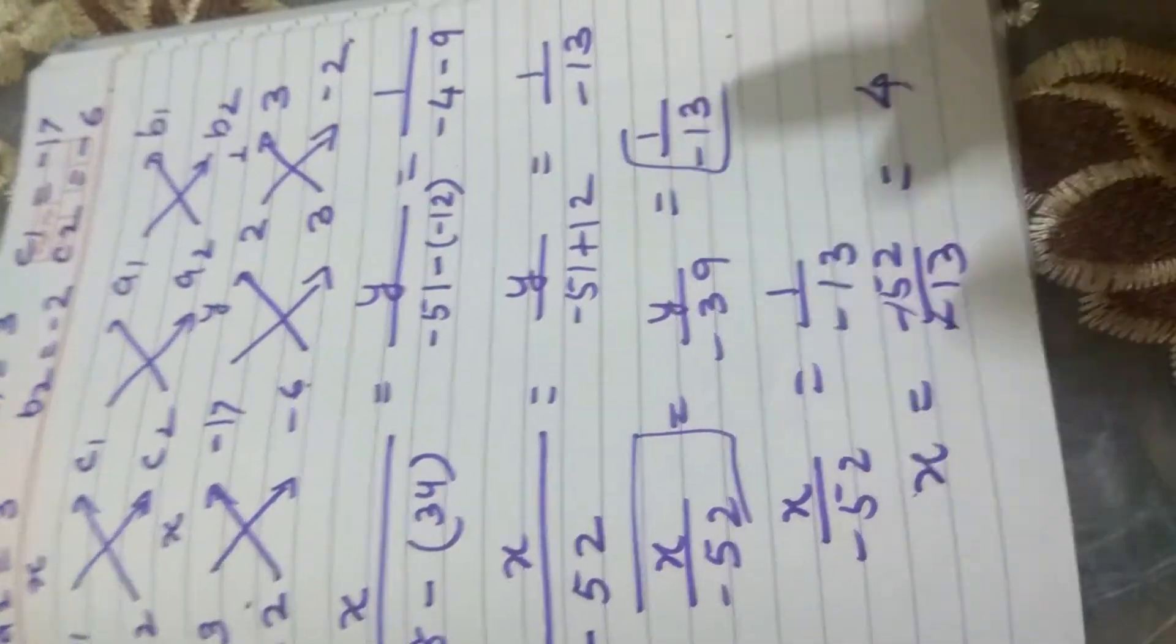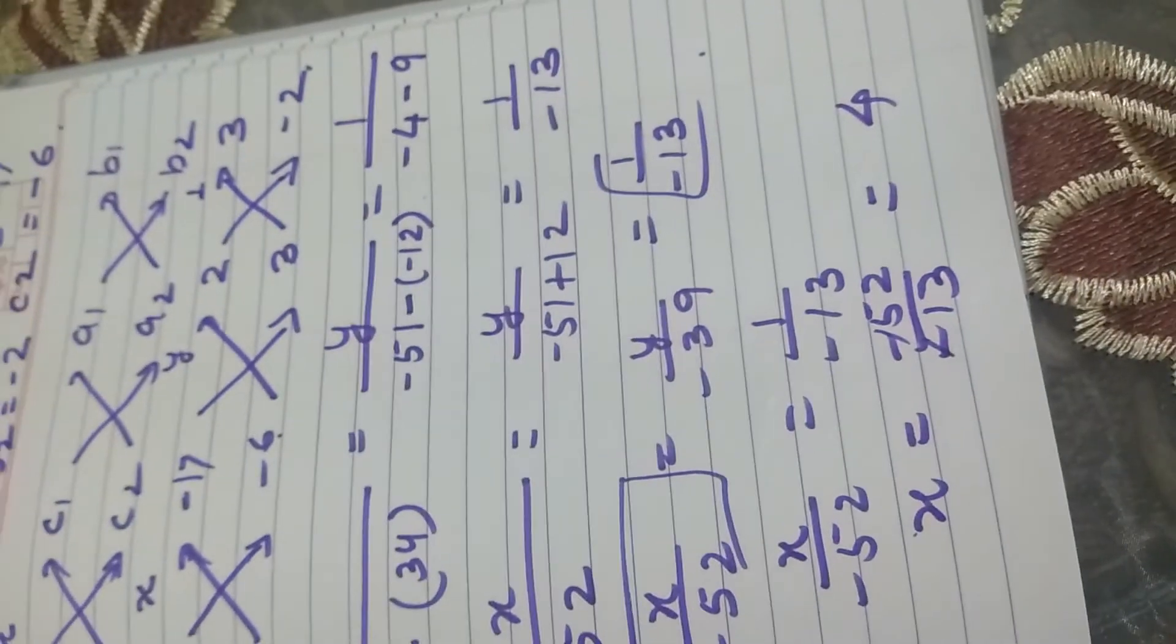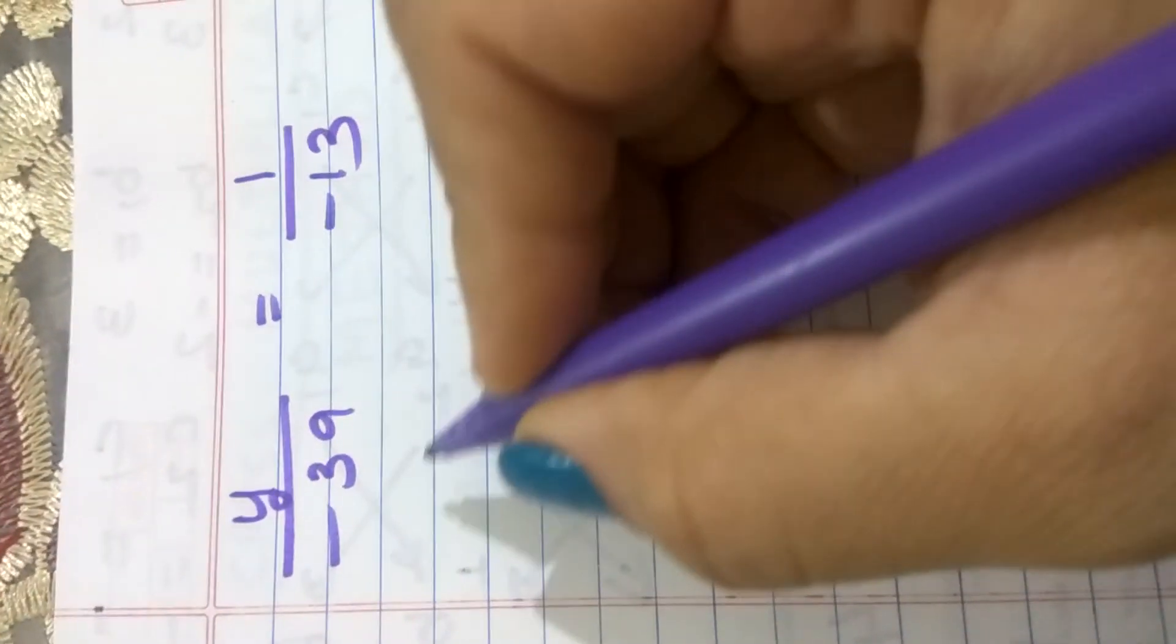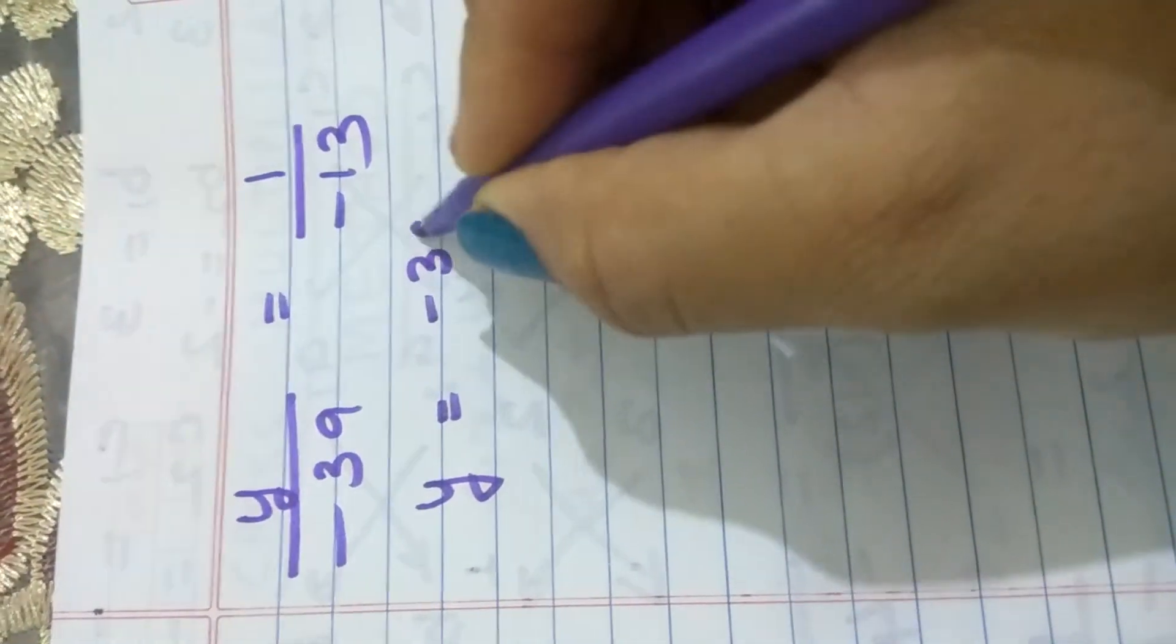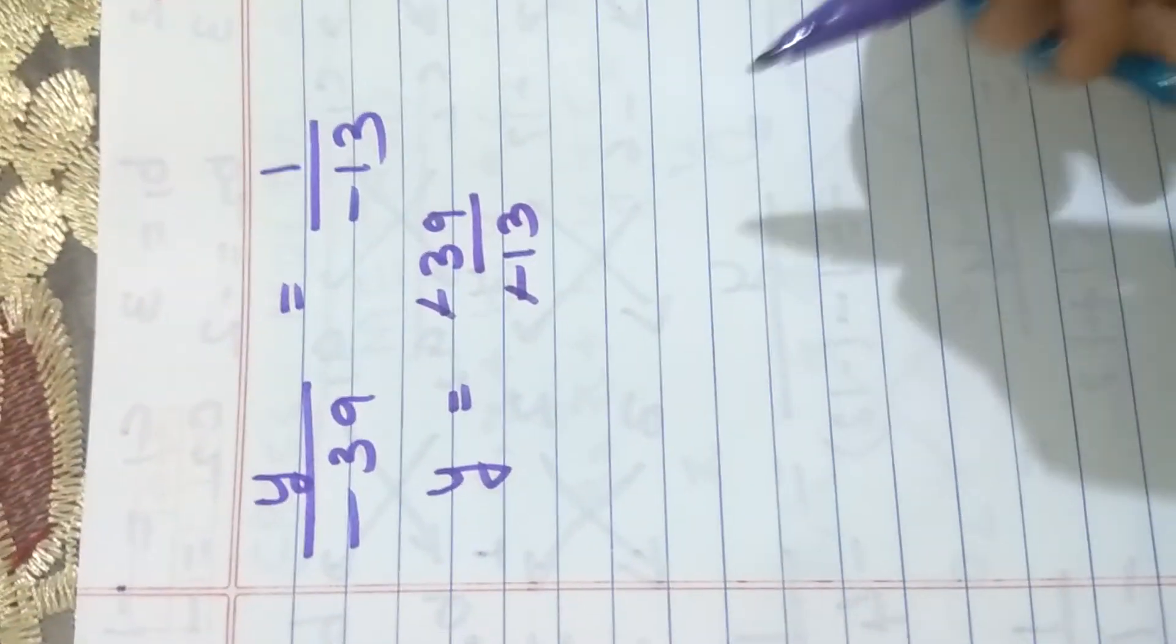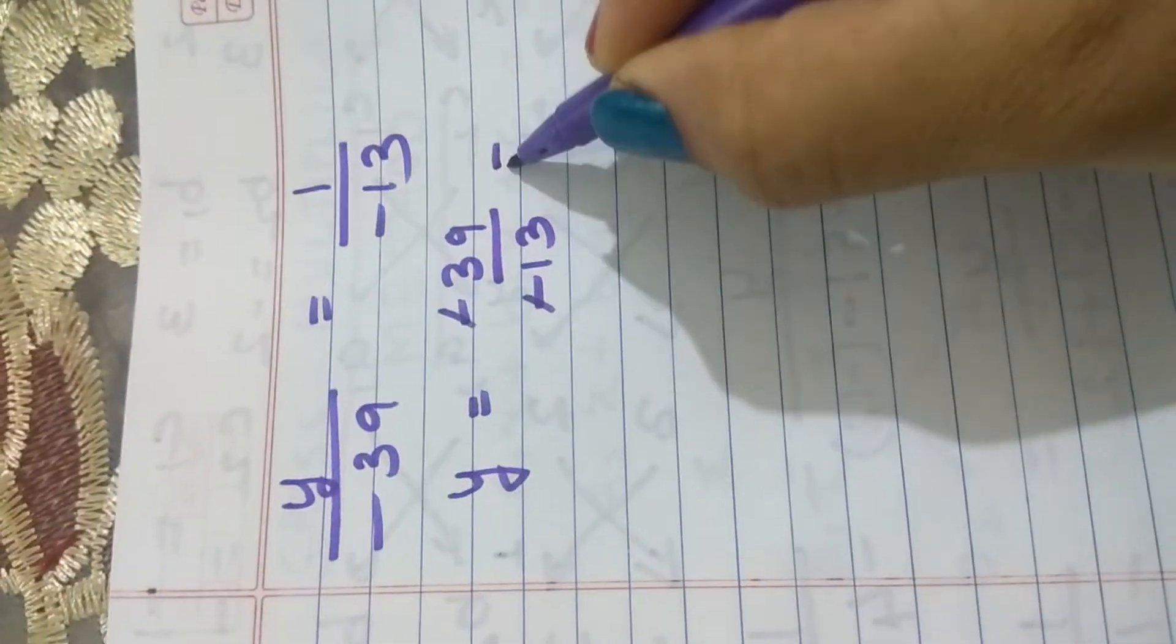Now, for finding out y, I will take this and this. Y upon minus 39 is equal to 1 upon minus 13. That means y equal to minus 39 upon minus 13. Again, the negatives get cancelled, so this comes out to be 3.